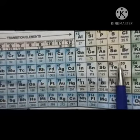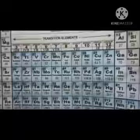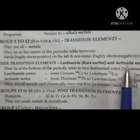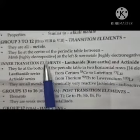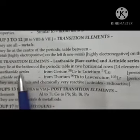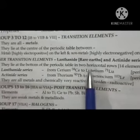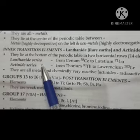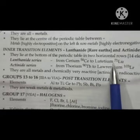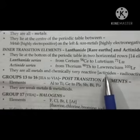What do you mean by inner transition elements? Lanthanide and actinide series are called inner transition elements — that means rare earth elements and radioactive elements. They lie at the bottom of the periodic table in two horizontal rows: the lanthanide series in period 6, from cerium to lutetium, and the actinide series in period 7, from thorium to lawrencium.